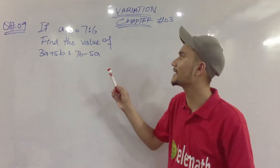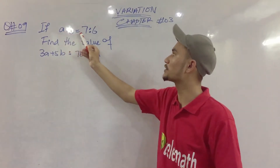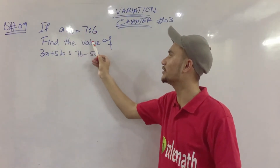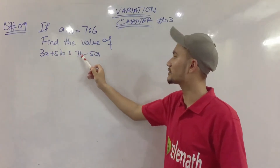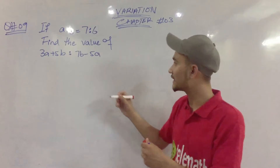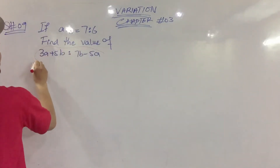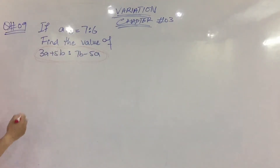If a ratio b equals 7 ratio 6, find the value of 3a plus 5b ratio 7b minus 5a.